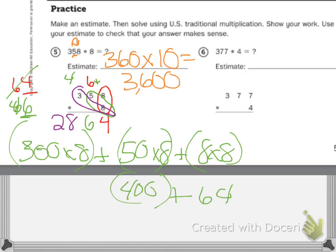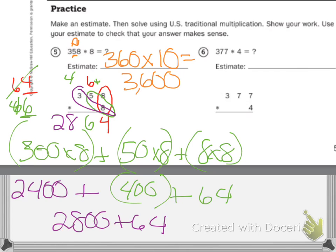I can check it — the estimate wasn't very close, but I rounded up, so that makes sense. If I use partial products: eight times 300 is 2,400, plus eight times 50 is 400, plus eight times eight is 64. Adding those together: 2,400 plus 400 is 2,800, plus 64 equals 2,864. My partial products and my traditional method match, and my estimate is a little off but makes some sense because I rounded up.